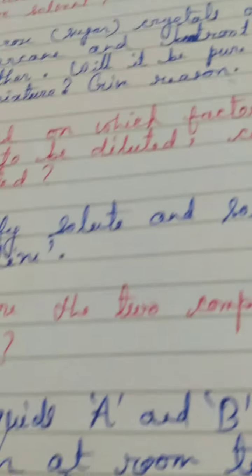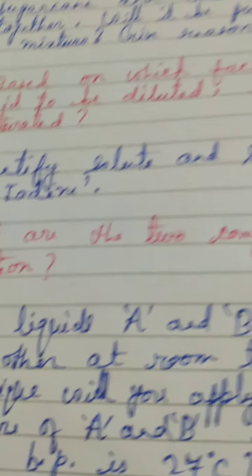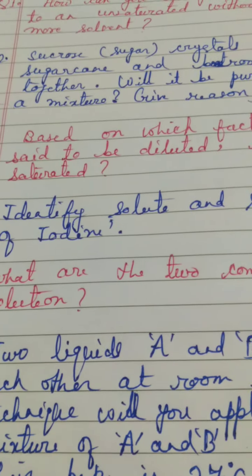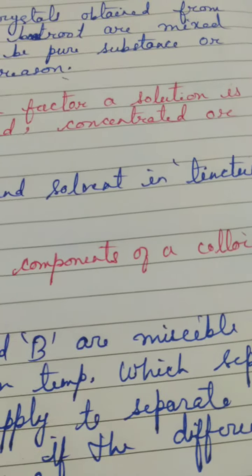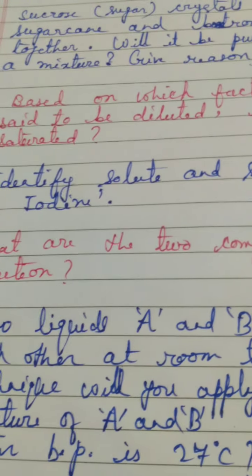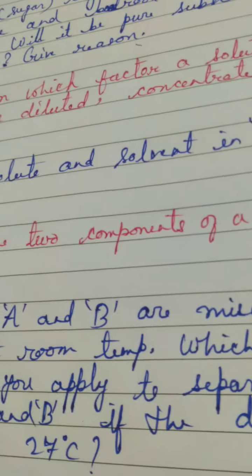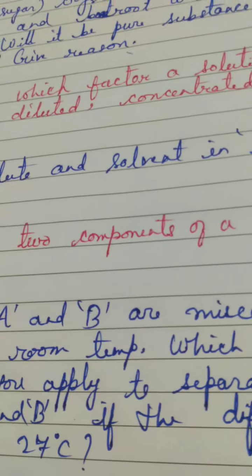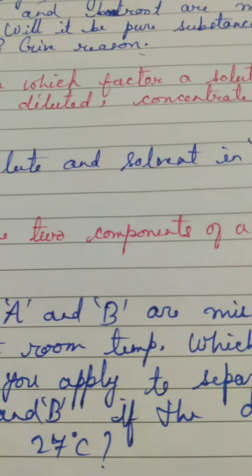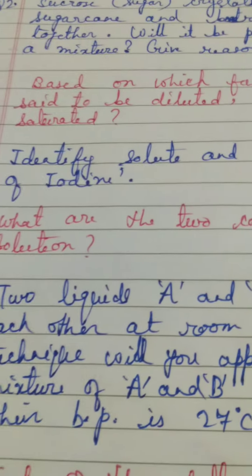Now here identify solute and solvent in tincture of iodine. Solute and solvent you have to identify in the mixture which is your tincture of iodine. Tincture of iodine actually is a mixture of sublimating substance iodine and the volatile liquid which is your non-liquid solvent alcohol. The solute is always taken as the smaller volume and the solvent is always taken as the bigger part which is your larger volume. So alcohol is the larger volume, it is solvent and the iodine is the smaller volume so it will be your solute.